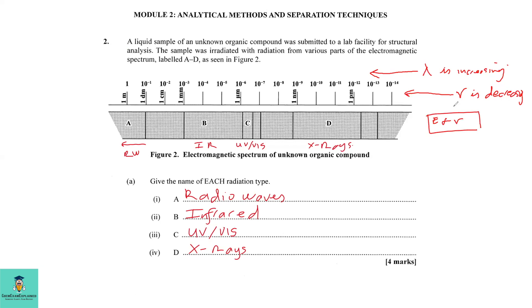Using that knowledge, going from D to A, we could say that A being the longest wavelength would be radio waves. Then the one shorter than radio waves would be infrared radiation, then UV-vis radiation, and after that D being the shortest, which is X-ray. If we had a letter further down this side, that would be gamma rays, but we are stopping at X-rays since we are dealing with only four letters. So again, A for radio waves, B for infrared radiation, C for UV-vis radiation, and D for X-rays.